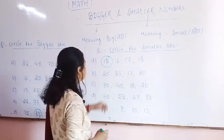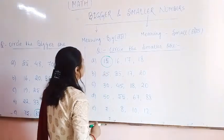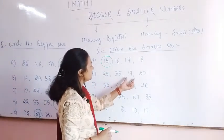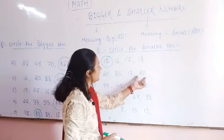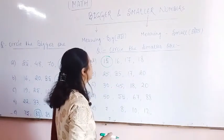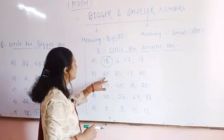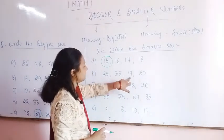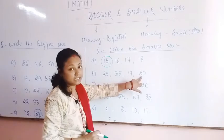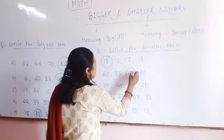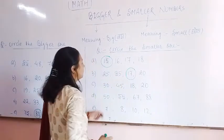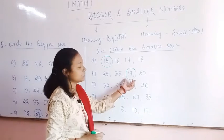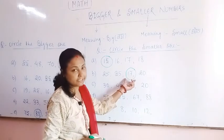Next question: 25, 35, 17, and 20. Which one is the smaller one? 17 is the smaller one.